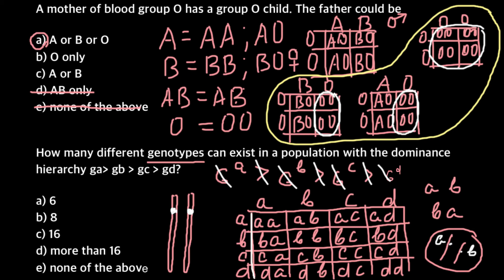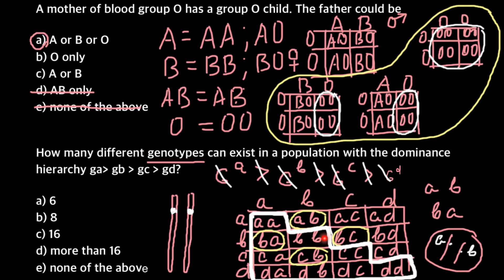That means we have fewer unique genotypes — some of them repeat. For example, we may have BA here and AB here — those are the same. And we have CB here and BC here — also the same. So we have repetitions, but we would have only unique genotypes in our final count. Let's count them: 1, 2, 3, 4, 5, 6, 7, 8, 9, 10.